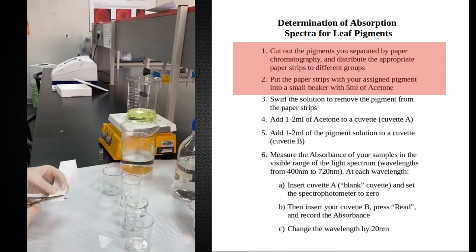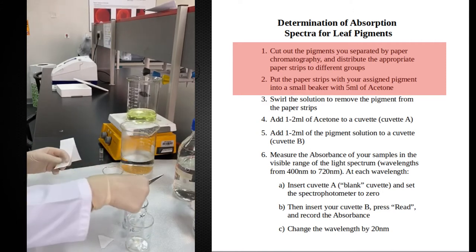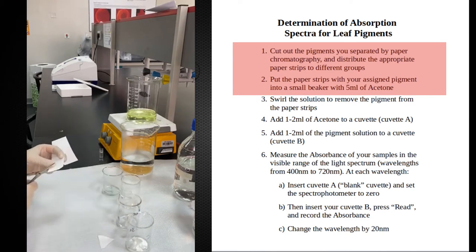I have in my beakers in order chlorophyll B, chlorophyll A, xanthrophil and carotene.